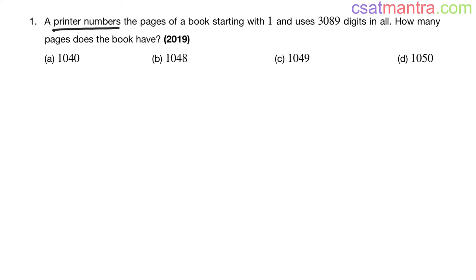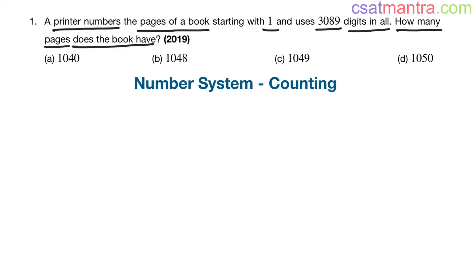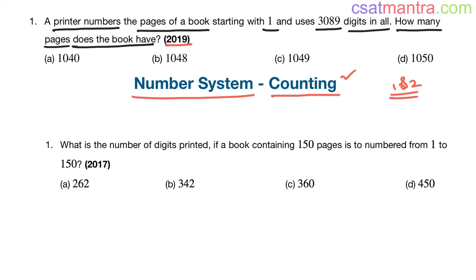A printer numbers the pages of a book starting with one and uses 3089 digits in all. How many pages does the book have? This question was asked in 2019, based on counting from the number system chapter. From the counting concept, every year one or two questions will be asked — very important and very easy in nature. A similar question was asked in 2017.